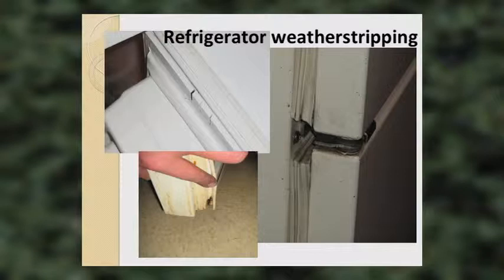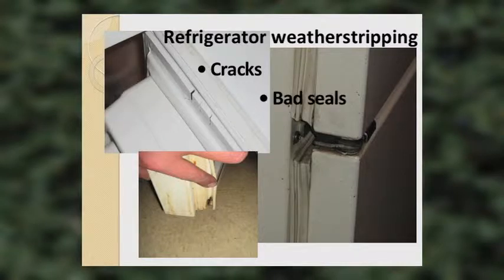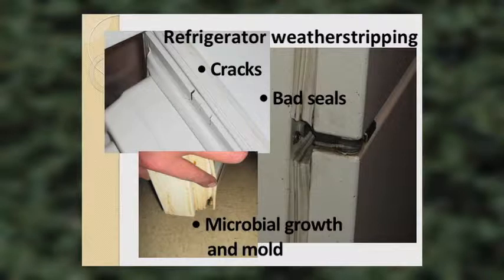Let's look at pictures of bad weather stripping. When you look at a homeowner's refrigerator, you're looking for cracks, places where the weather stripping doesn't seal well, and microbial contamination. In the lower left picture on this slide, you can see mold growing. It's possible that customer is in a high-humidity area with the energy saver switch turned on. First, recommend they shut that off and bleach it thoroughly.